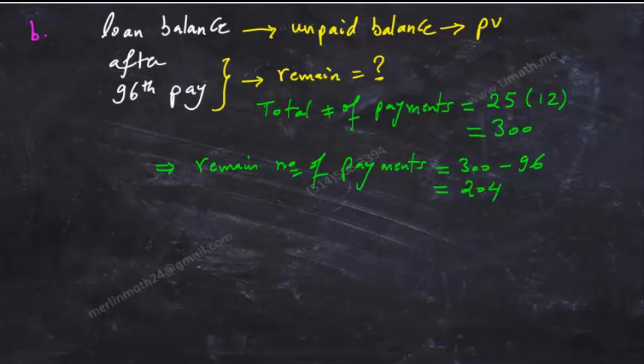Which is 204. Now we apply pv formula again but with n equals 204, and that would be the unpaid balance after the 96th payment.